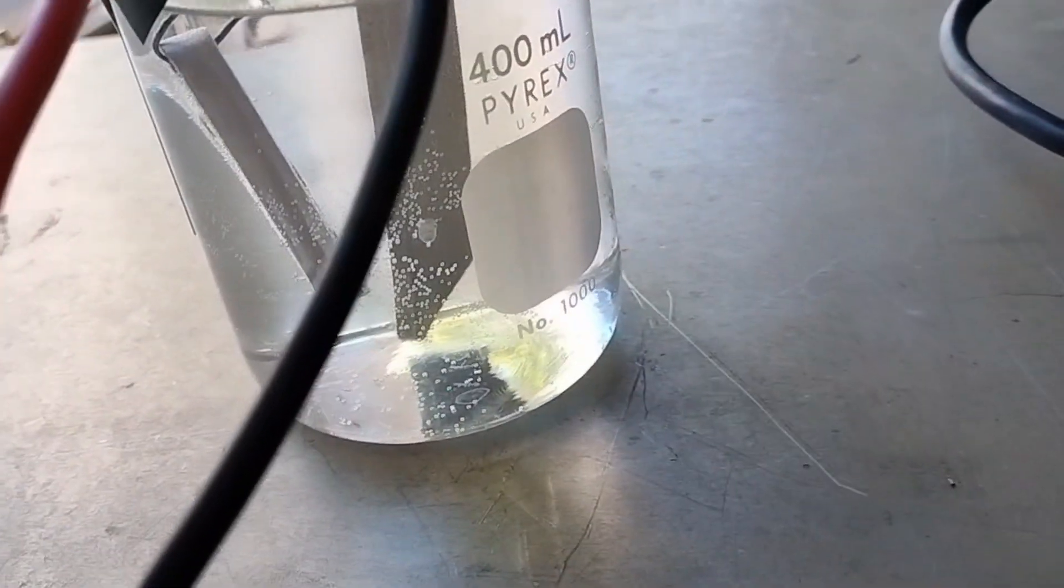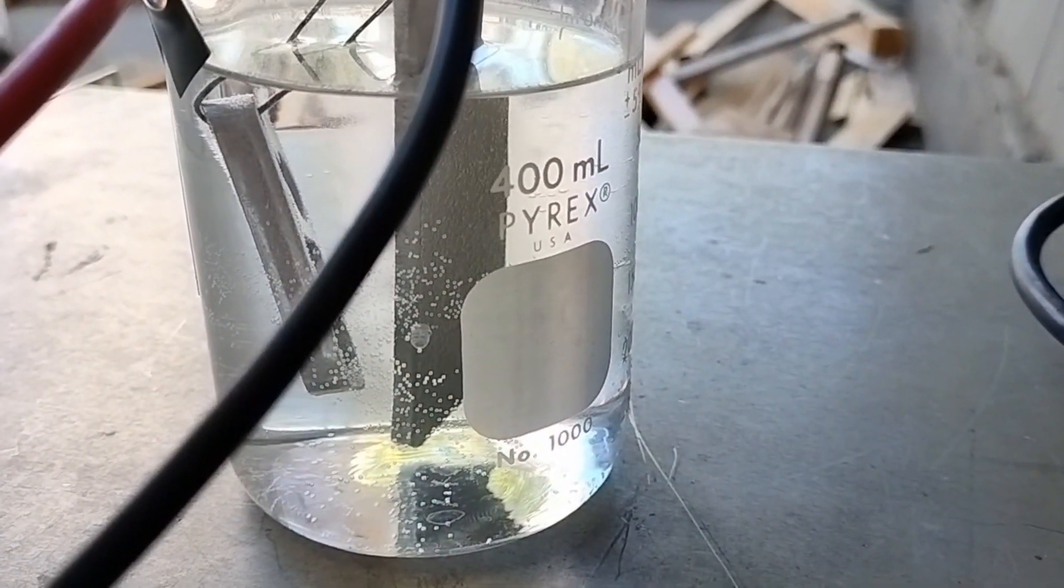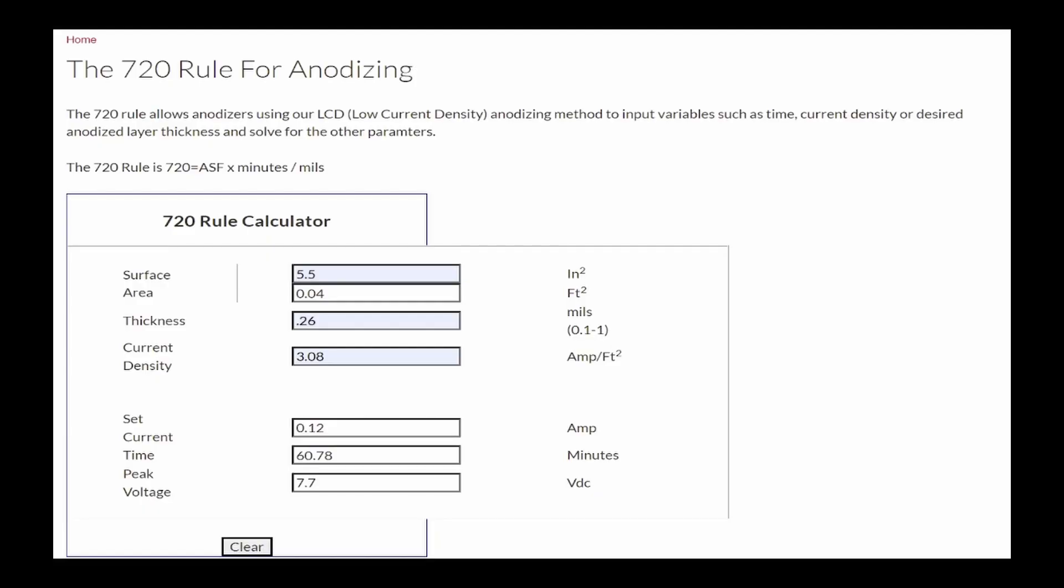I placed the cathode and anode in the beaker with 2 molar sulfuric acid. According to Caswell's anodizing calculator site, 7.7 volts is required for one hour to build an oxide layer thick enough for our purposes.